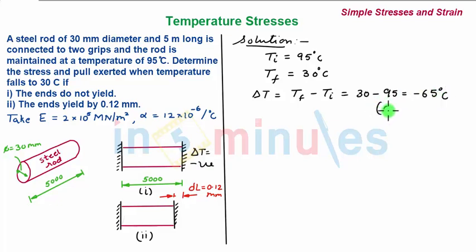We now take the first case in which our ends, that is the grips, do not yield. So the compatibility equation delta L is 0. Now we write the delta L equation.